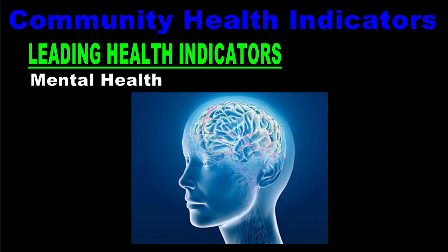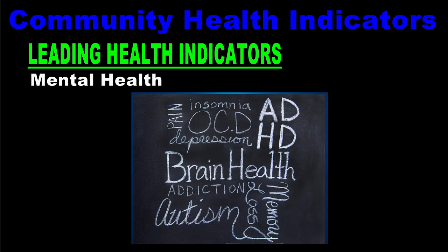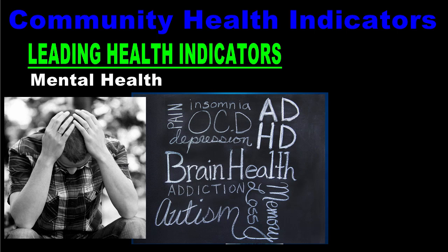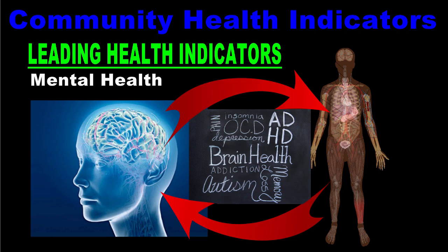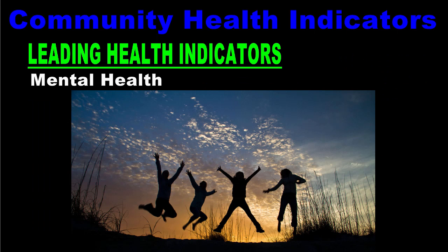The next leading health indicator is mental health, which focuses on preventing, diagnosing, and treating mental health disorders like depression or anxiety. Mental health is inextricably linked with physical health. Data shows that mental health disorders are associated with the occurrence of serious chronic conditions like diabetes, heart disease, and cancer. Therefore, if we can improve the mental health of Americans nationwide, then we can also improve overall physical health and well-being.